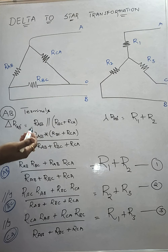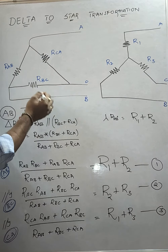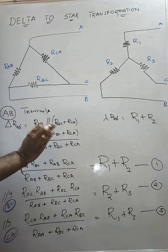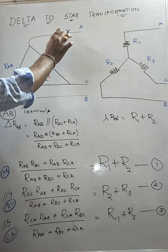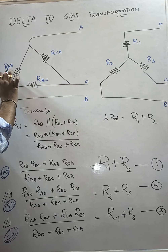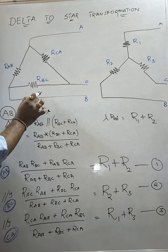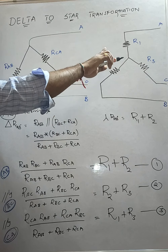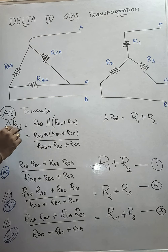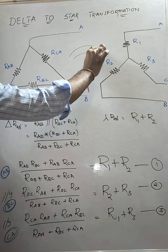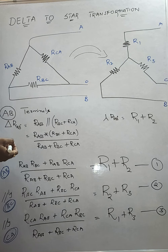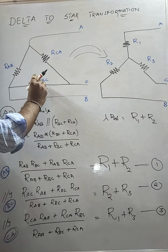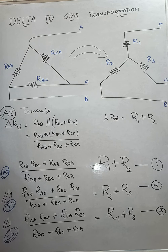How to convert? Make it in a sequence. A, B, C are given for the part of delta; 1, 2, 3 are given for the part of star, for the sake of convenience. In between A and B terminals, the resistance is R_AB; R_BC between B and C; and R_CA between C and A. And the star resistances are R1, R2, R3. I would like to convert all this delta shape to that star shape. Finally, which values would I like to find out? R1, R2, R3 — in terms of R_AB, R_BC, R_CA. That's our final derivation.